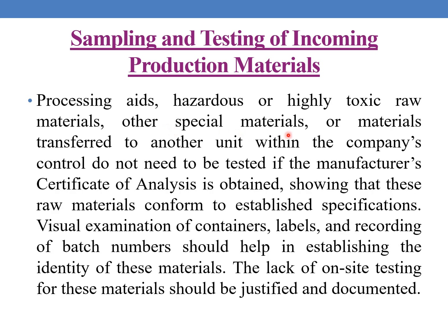Processing aids, hazardous or highly toxic raw materials, other special materials, or materials transferred to another unit within the company's control do not need to be tested if the manufacturer's certificate of analysis is obtained showing that these raw materials conform to established specifications. Visual examination of containers, labels, and recording of batch numbers should help in establishing the identity of these materials. The lack of on-site testing for these materials should be justified and documented.